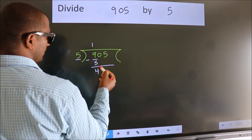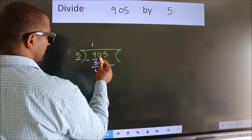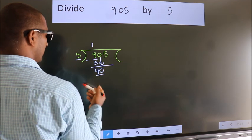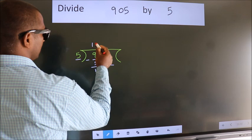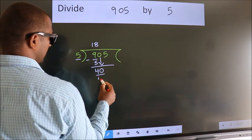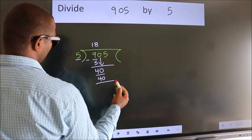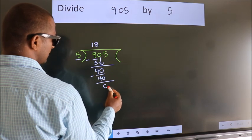After this, bring down the beside number. So, 0 down. So, 40. When do we get 40 in the 5 table? 5 eights 40. Now we subtract. We get 0.